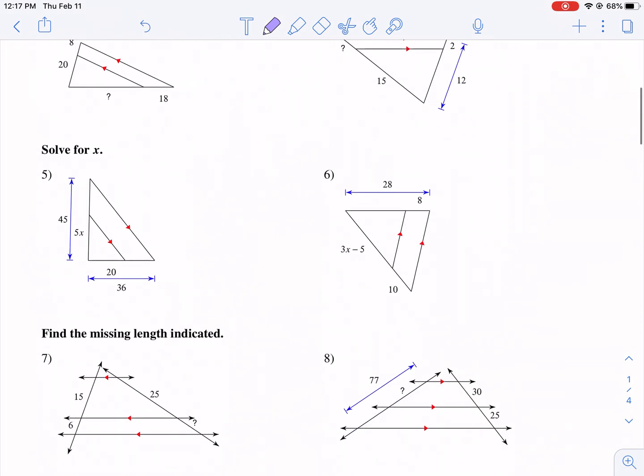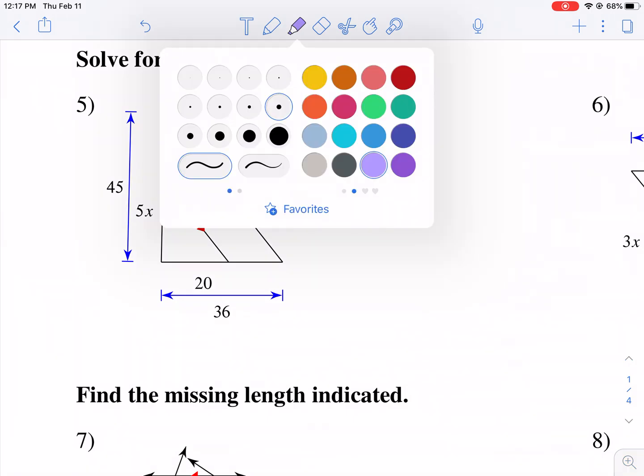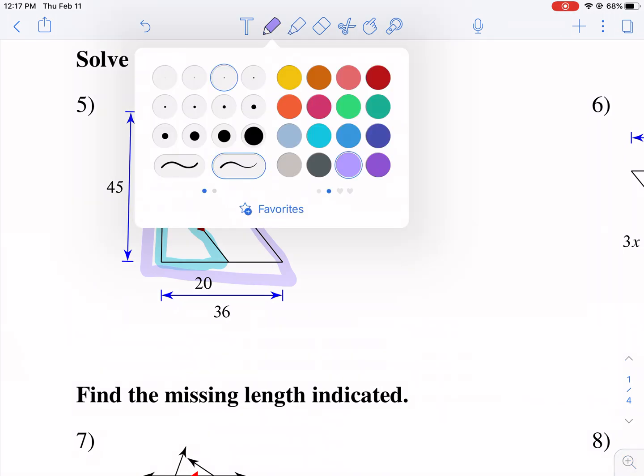All right, let's go ahead and move on to another problem. Find the missing length indicated. Let's solve for x. Let's go to this next part. So I'm going to show you another way to do this. We have this blue triangle here and we have the big triangle. This is what I started to do with the other one, and this one's definitely going to be good. So we're going to compare the sides. I'm going to compare the sides of the blue triangle.